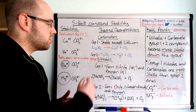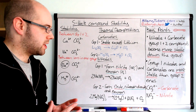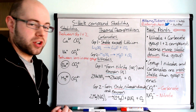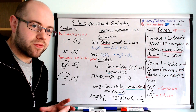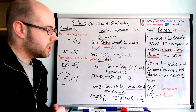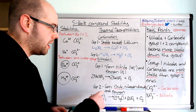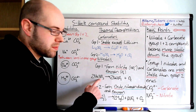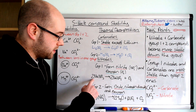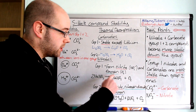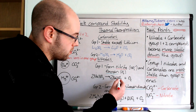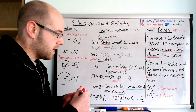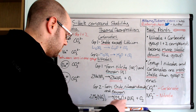Now on to nitrates. Nitrates are a little bit more tricky. Group 1 nitrates form a nitrite and oxygen when thermally decomposed. A nitrite is NO2-. For example, two moles of sodium nitrate — NaNO3 — when heated will decompose to form sodium nitrite (highlighted in red) plus oxygen (highlighted in green).